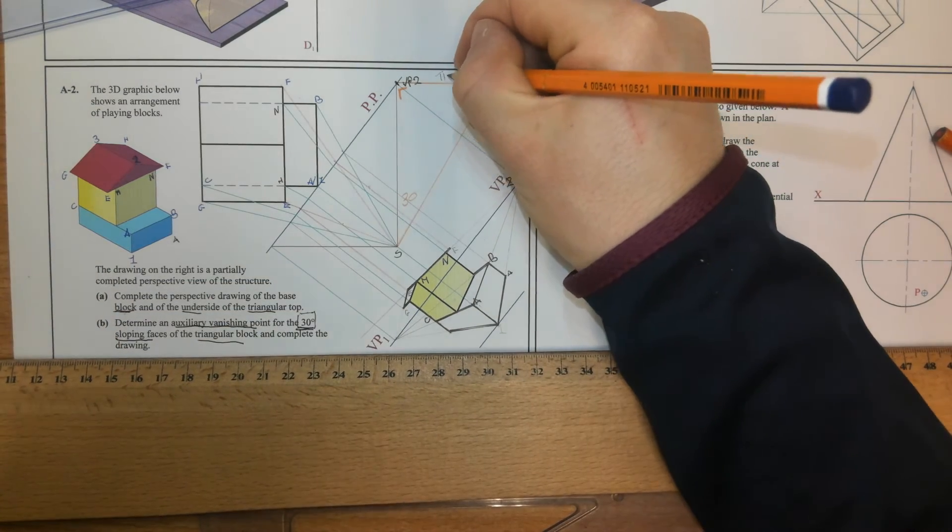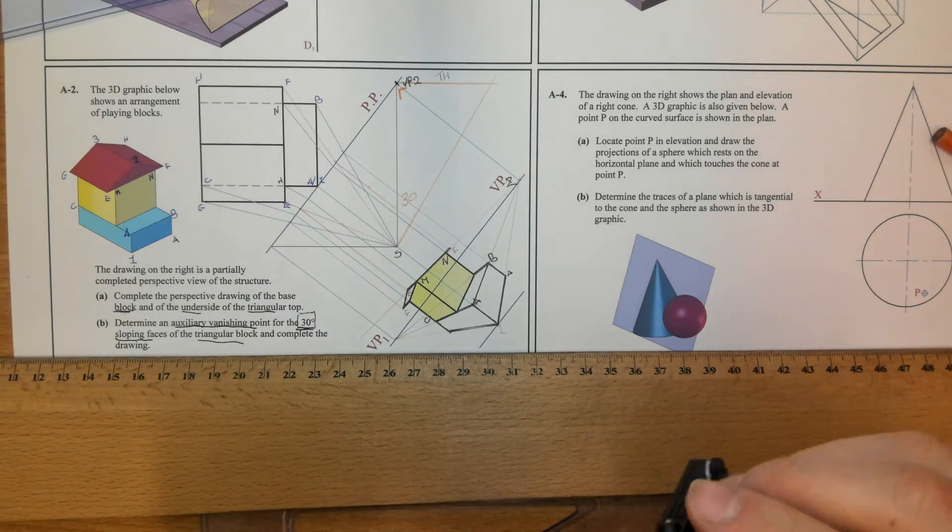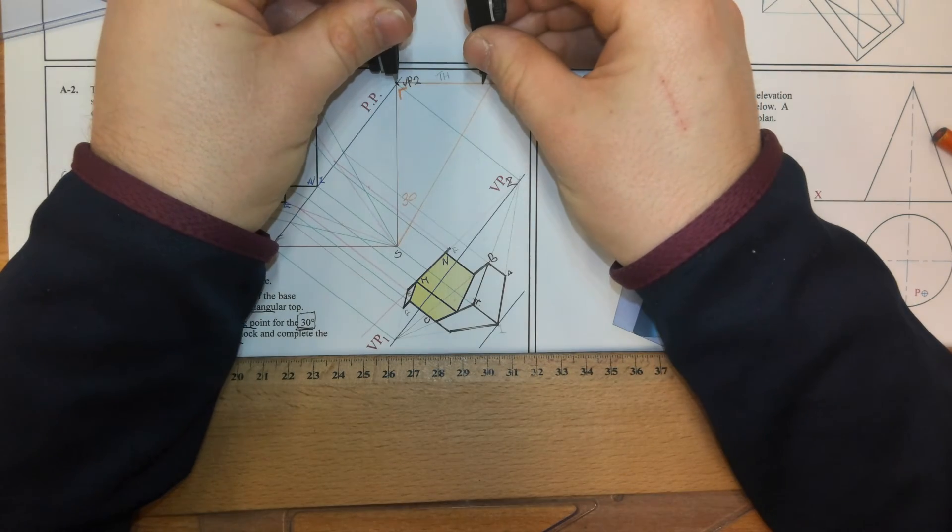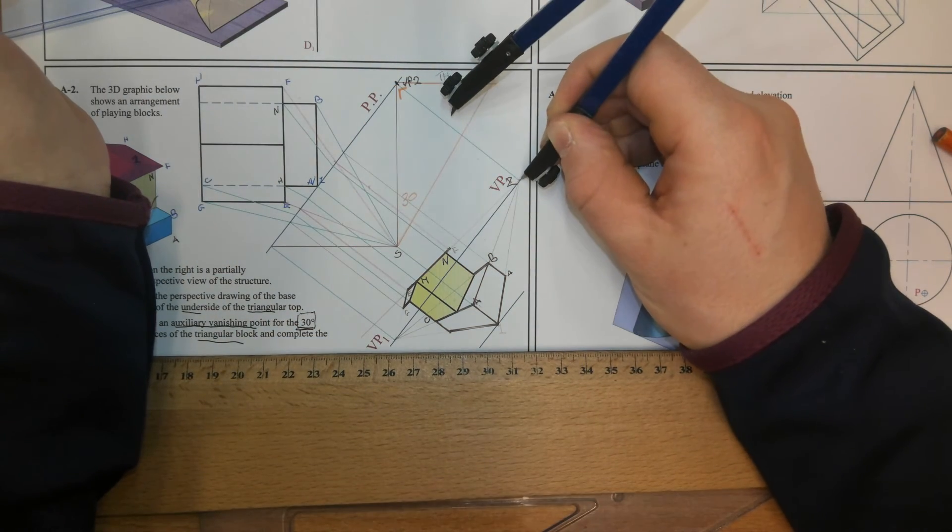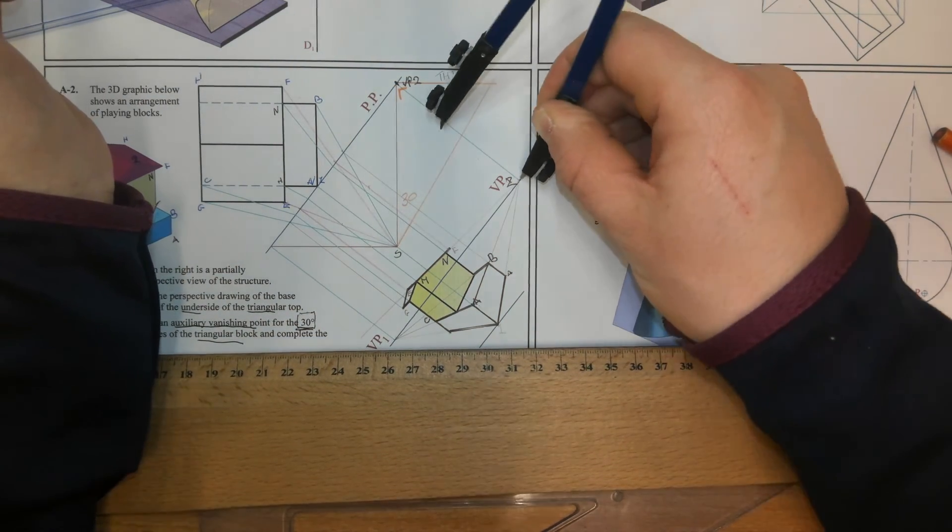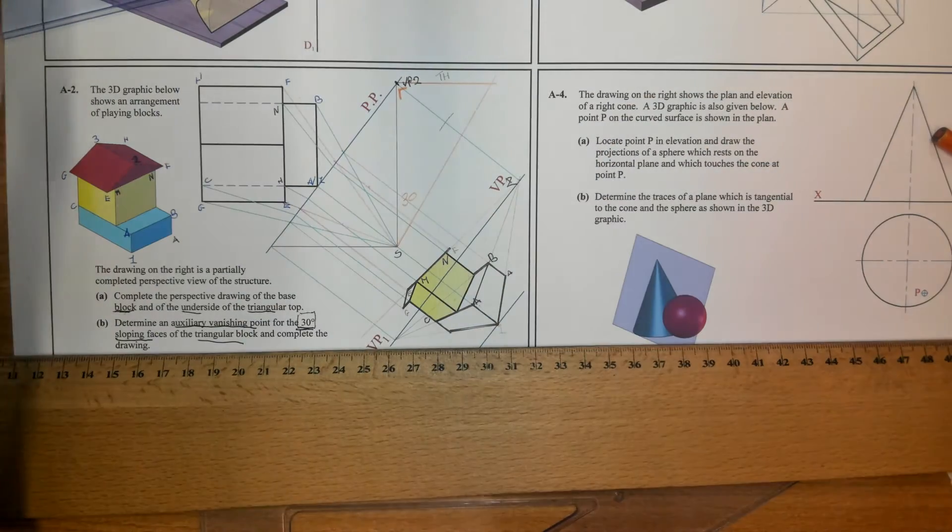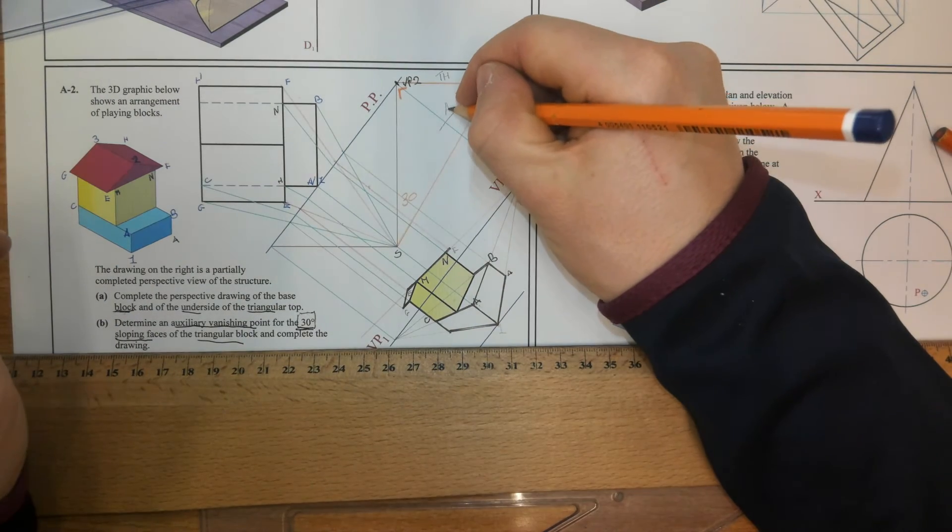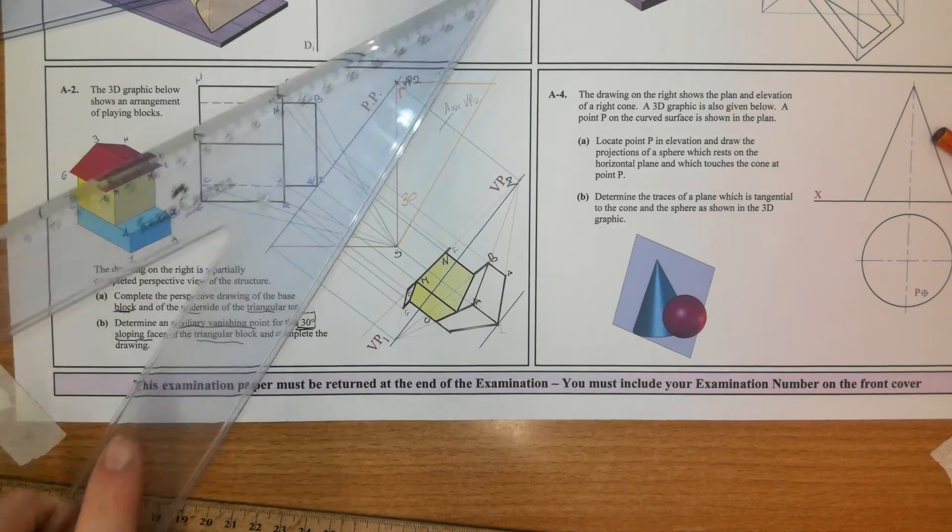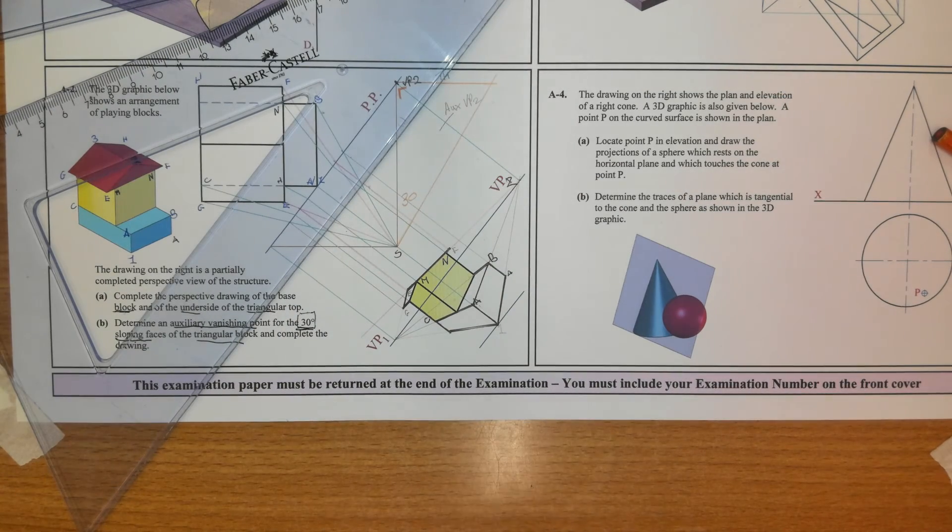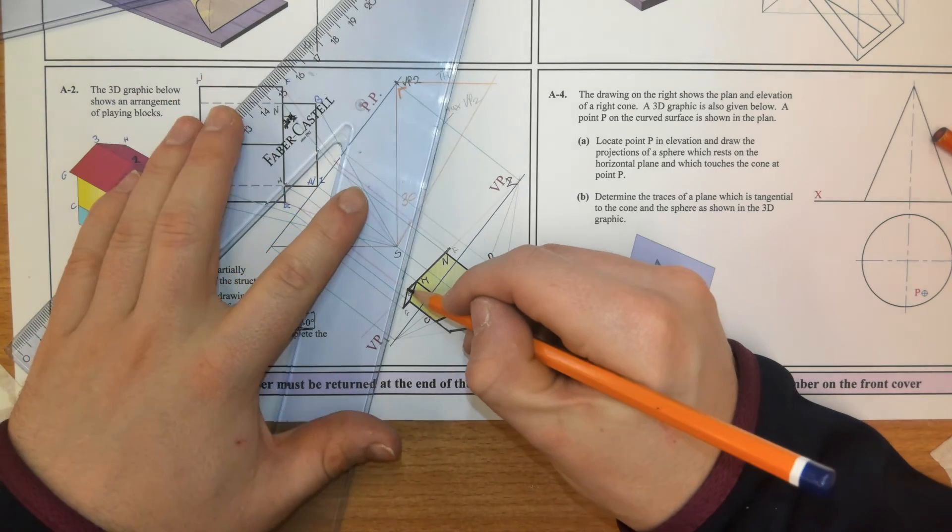Now that's the true height. So I'm going to take that true height. I'm going to lift my compass and step it over VP2. Now that's the auxiliary VP2. So the sloping surface is going to go vanish towards that.